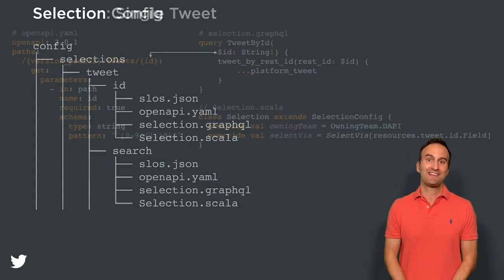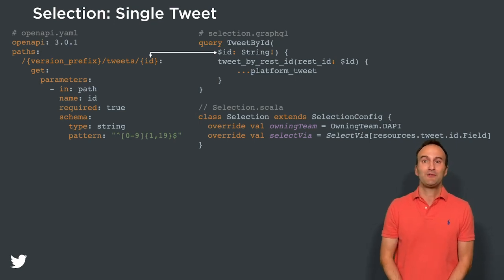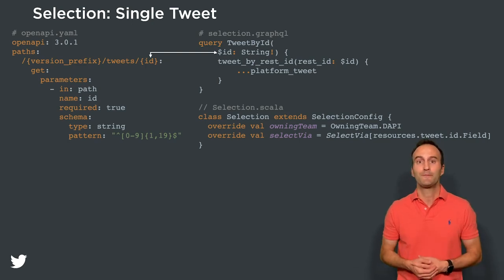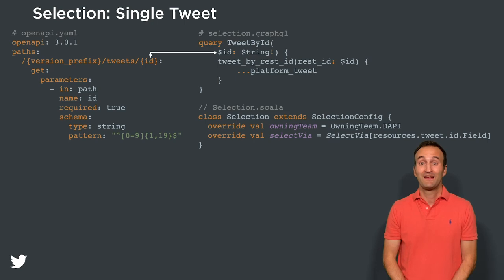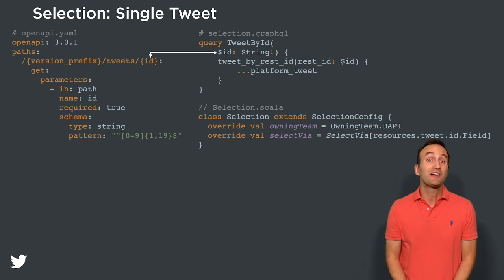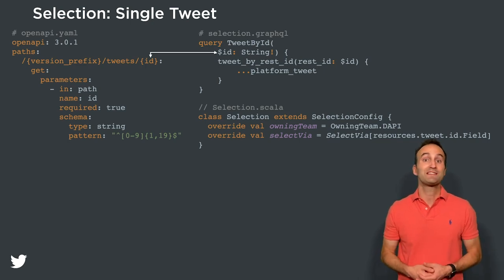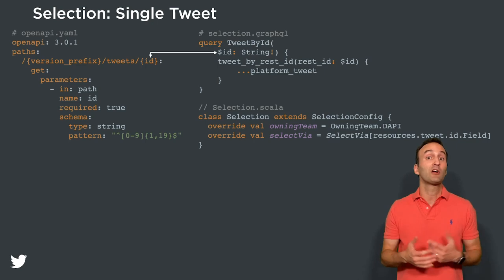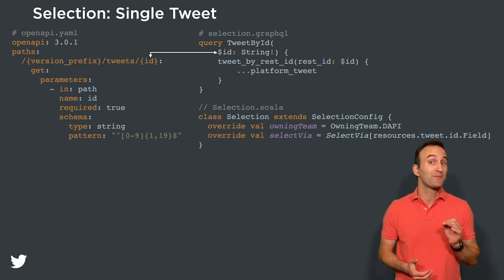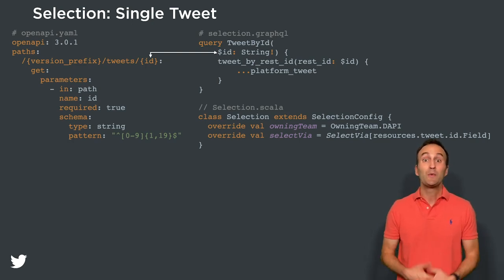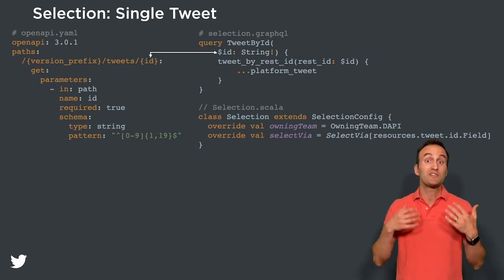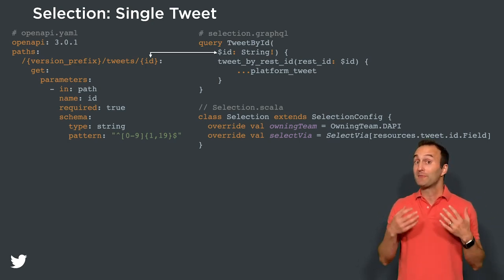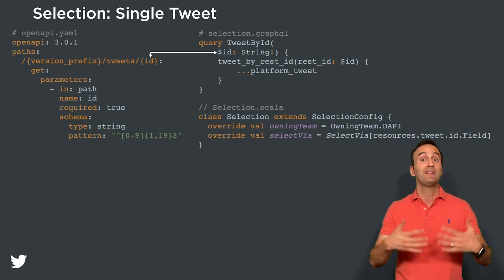First, let's define the selection for looking up a tweet by its ID. On the left of your screen, you can see the openapi.yaml file that defines where the selection will be exposed in our Twitter API. The version prefix variable is a placeholder that the platform fills in for whatever major version of our API is currently enabled, and the ID variable is a path parameter — a required string that must conform to the specified regex. On the top right, you can see the contents of the selection.graphql file, which specifies a GraphQL query for retrieving tweets. The required string param in the GraphQL query corresponds to the required path parameter defined in the openapi.yaml file. We then call the tweet_by_rest_id field in Twitter's GraphQL schema, which returns a tweet type, and specify that we wish a platform tweet to be returned — which is composed of all the data needed to render a tweet depending on the customer's request.